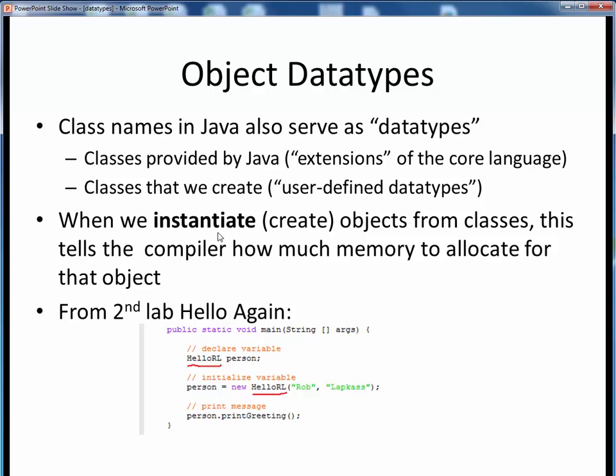When we instantiate or create a new object from a class that we've written, we're creating a new object that, practically speaking, has a user-defined data type.